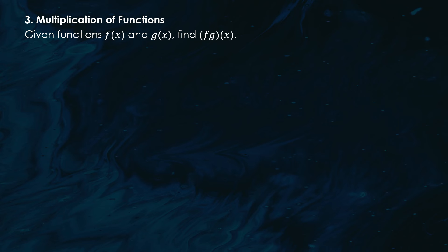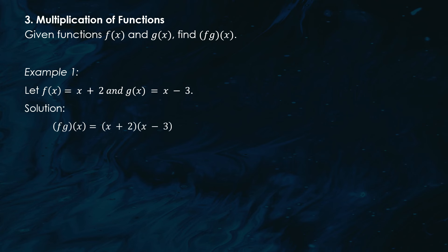Now let's multiply functions. Let f(x) = x + 2 and g(x) = x − 3. To find the product, we multiply them together: (f · g)(x) = (x + 2)(x − 3). Expanding this, we get x² − x − 6. So the product of the functions f and g is x² − x − 6.